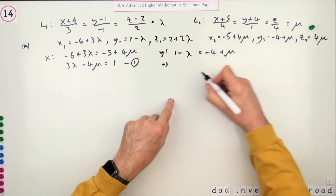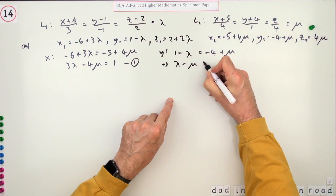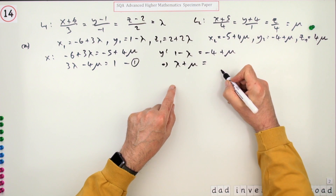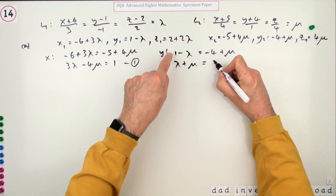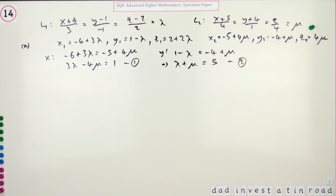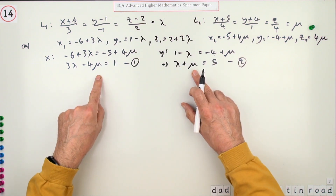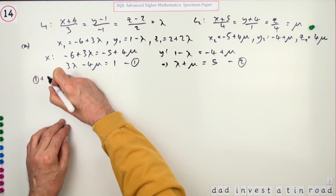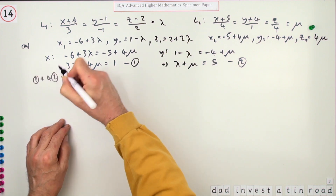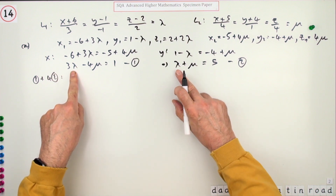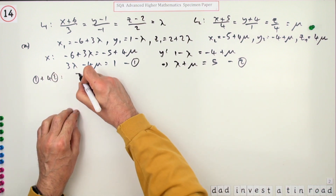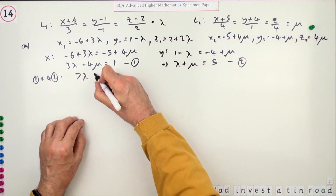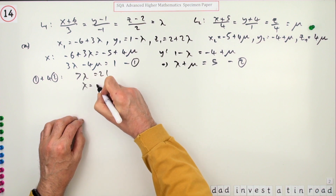Substituting the y-coordinates: one minus lambda should equal negative four plus mu. Rearranging, lambda plus mu equals five. That's a second equation. To eliminate mu, I'll take one of equation one and four of equation two. That gives seven lambda, the mu terms cancel, and the right-hand side gives 21, so lambda equals three.